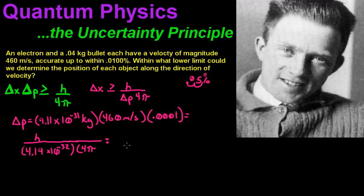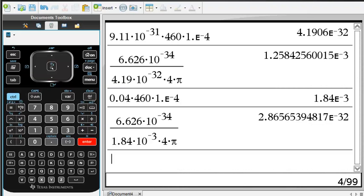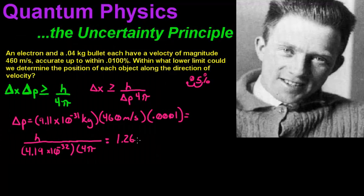Since it is to the negative 3rd, we can just say 1.26 millimeters, which is not really accurate. I mean, you are talking about, we can only measure, the accuracy is only within 1.26 millimeters, and that is like best case scenario.